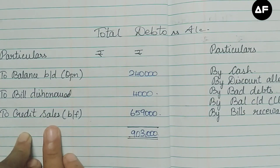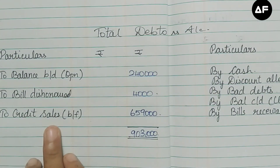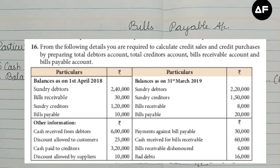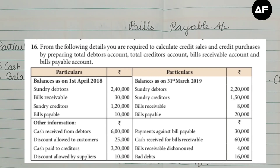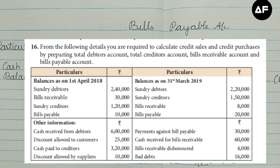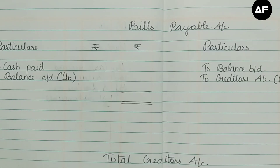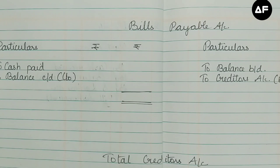Next, we open the bills payable account and total creditors account to find the credit purchases. For the bills payable account, we need the opening and closing bills payable. There is no dishonor or acceptance, so the only extra item is cash paid against bills payable. Altogether we have three items and the balancing figure to be transferred to the creditors account.